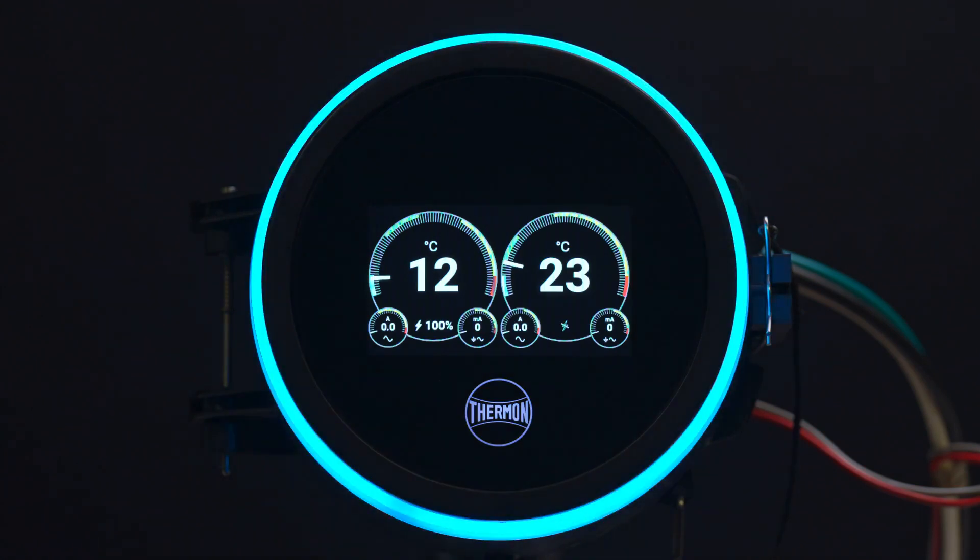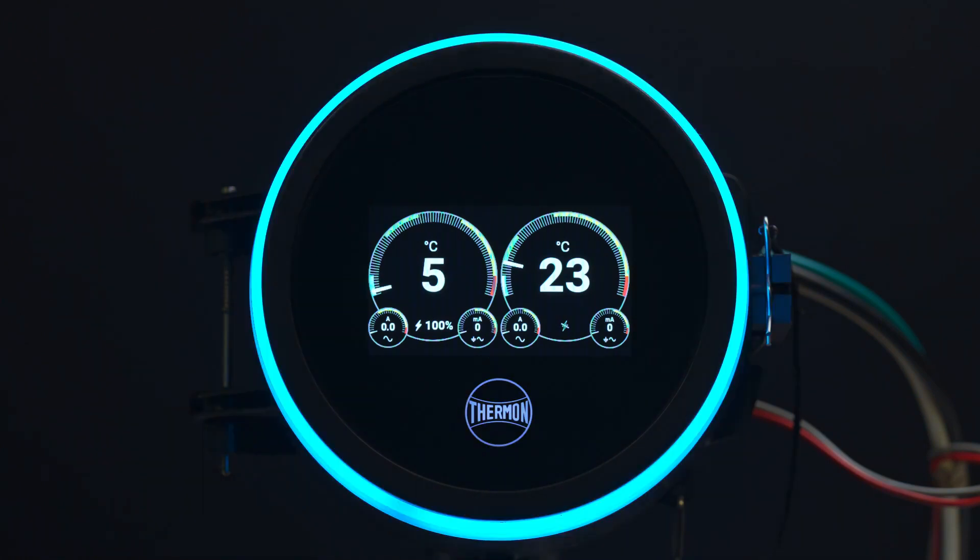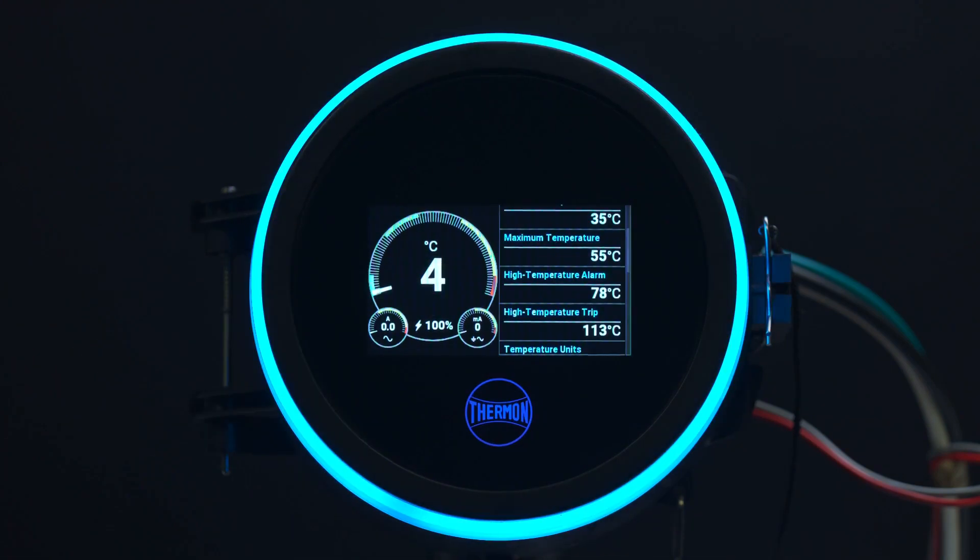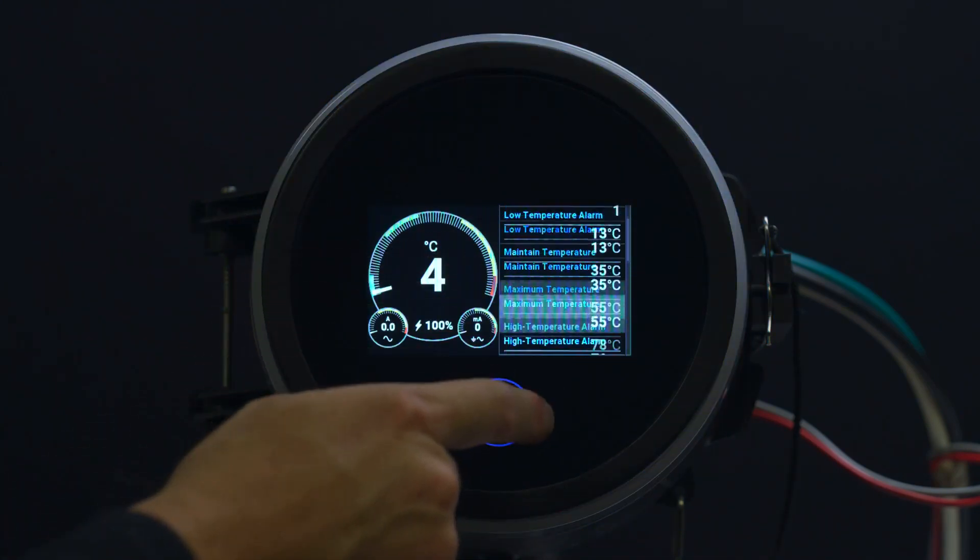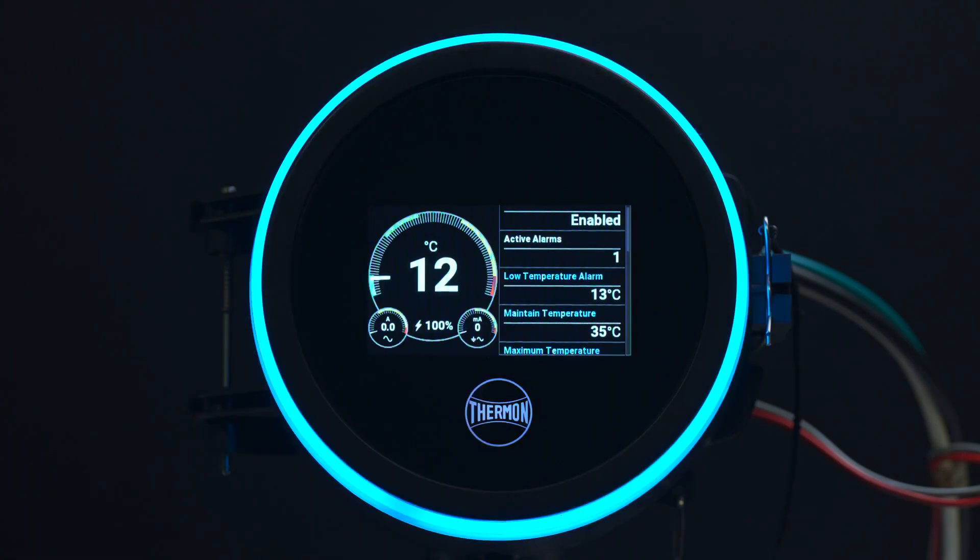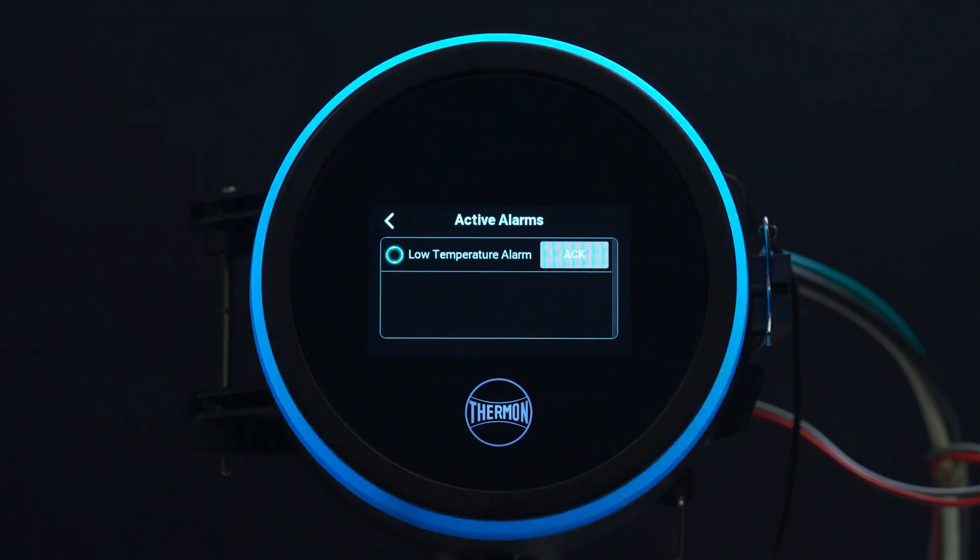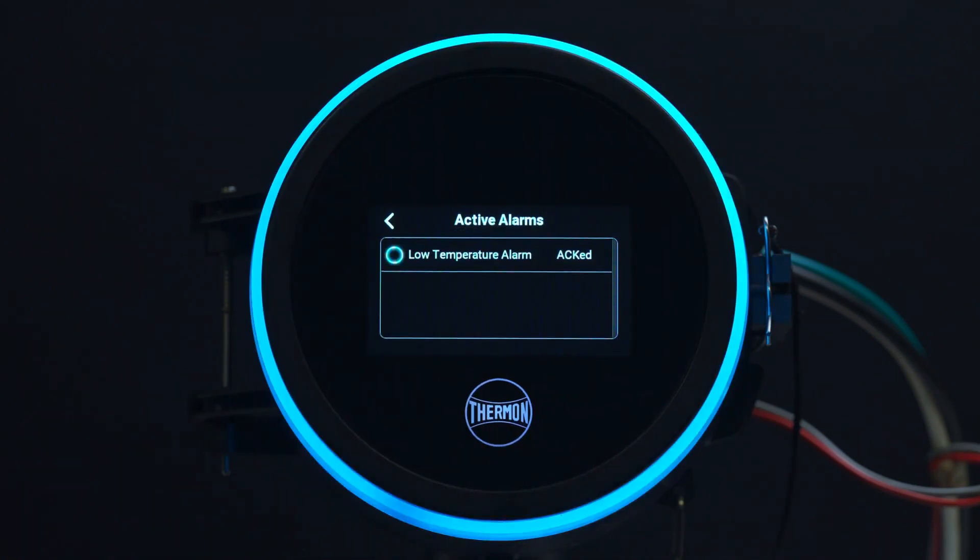Notice the light ring flashing blue and wiping to the left. The blue light wiping to the left indicates circuit number 1 is in a low temperature alarm state. Touch the gauge on the left for circuit number 1. At the top of the menu is active alarms. Touch active alarms and it will bring up a current list of active alarms. You can acknowledge all alarms or each alarm individually.